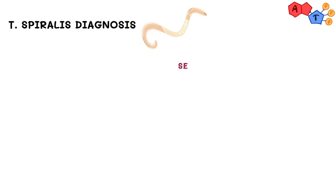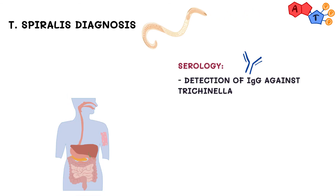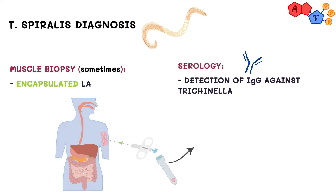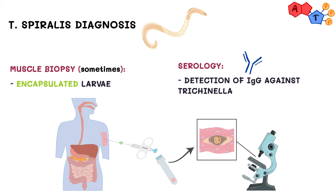For diagnosis, we can use serology. However, muscle biopsy is warranted sometimes to diagnose Trichinella spiralis, where it will show encysted or encapsulated larvae inside the muscle.